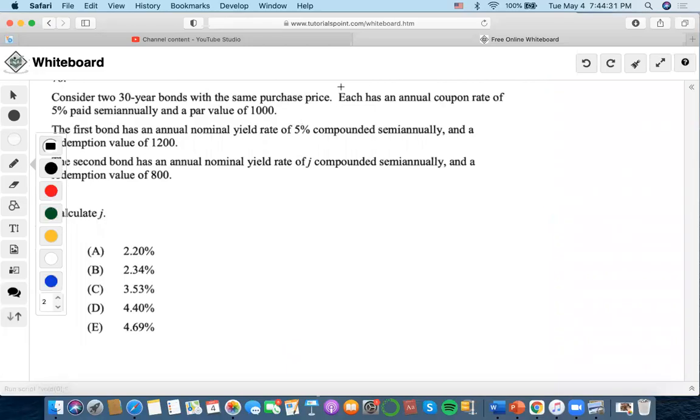Okay, so for this problem we're dealing with bond purchasing and the bond pricing formula. Let's do first and second bond: par value of $1000, coupon rate paid semi-annually.